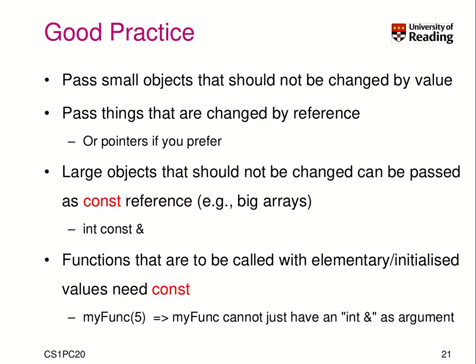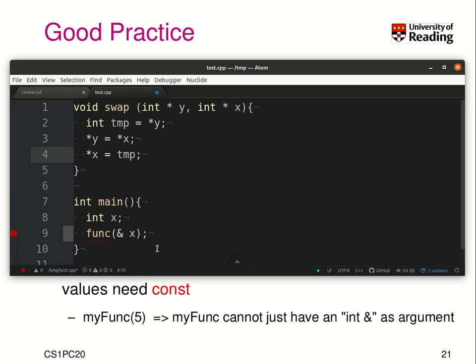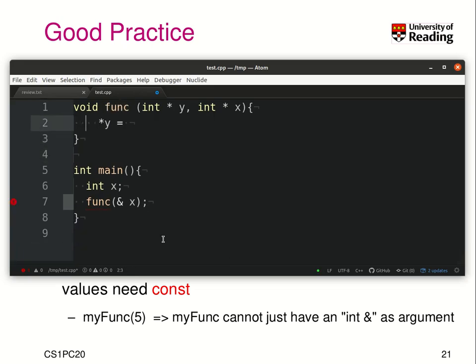Or use pointers if you prefer them. Large objects that should not be changed can be passed as const reference. So you can have something like x being a reference to a constant integer, or an array of constant integers, and so forth. Functions that are to be called with elementary data types or initialized values need to be const. Let me illustrate this here — let's go back to our original function.